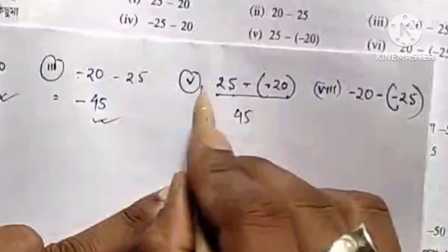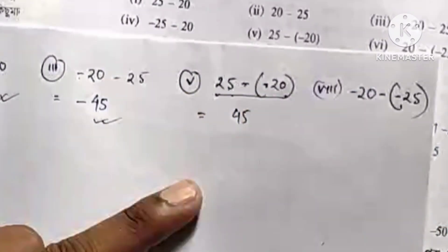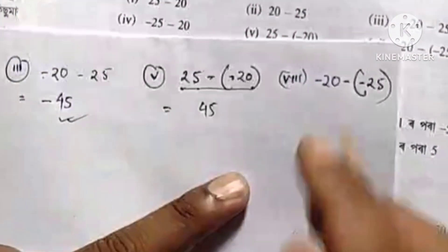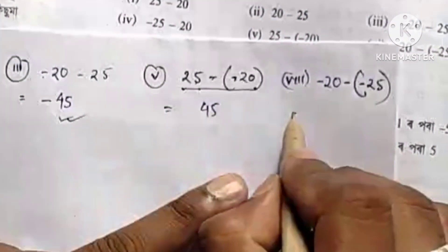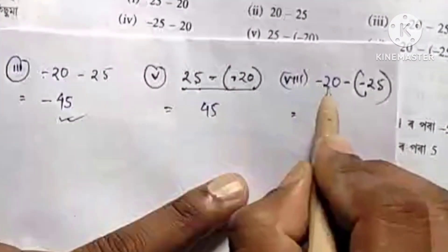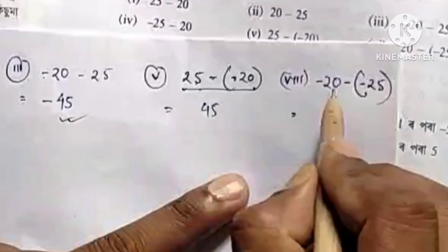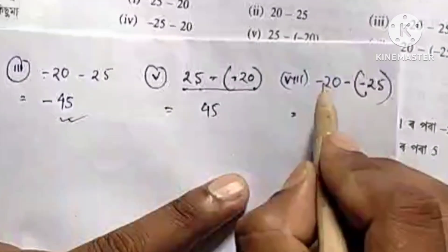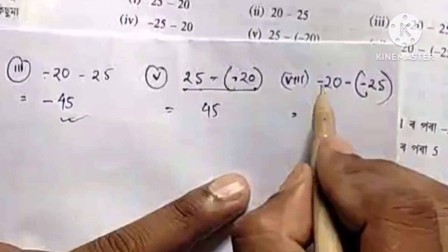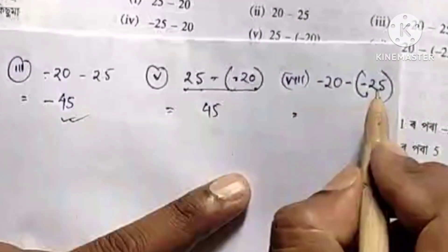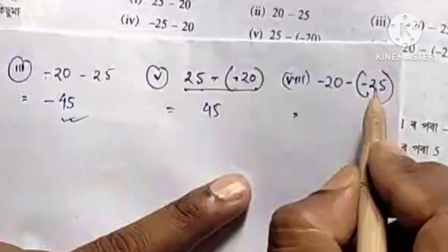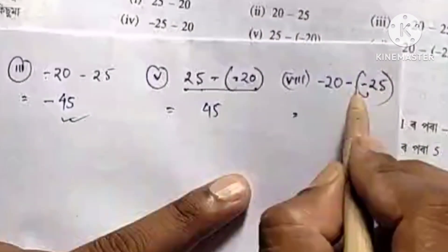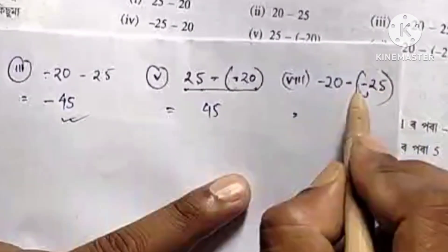Because that is plus — that is plus. So, the third number has minus 20 and minus 25. 20 is minus, and 25 and the sin is also minus.